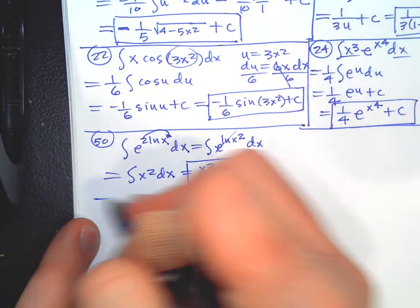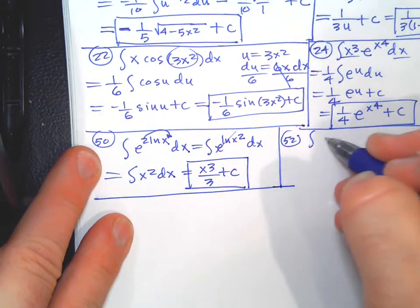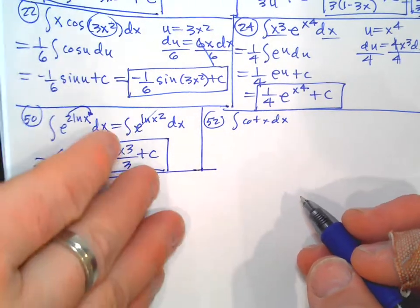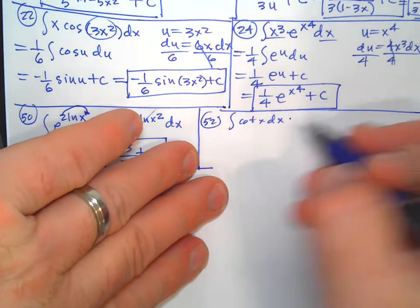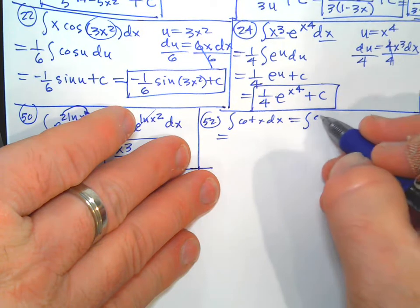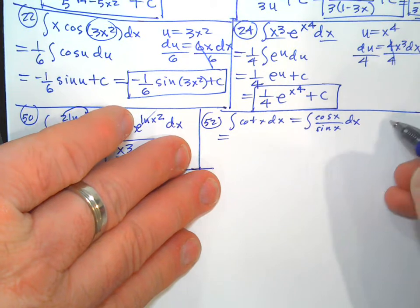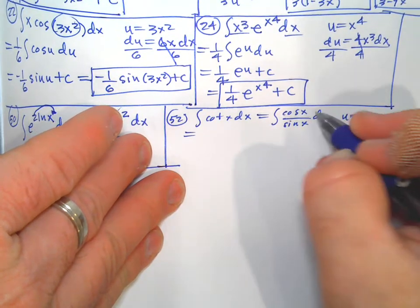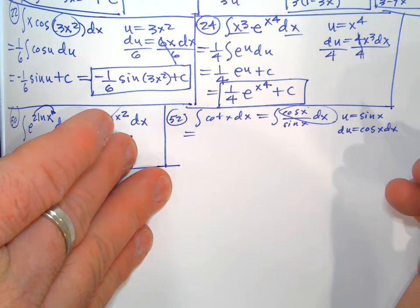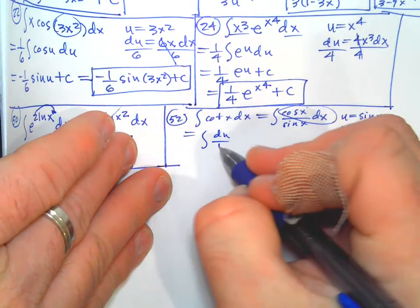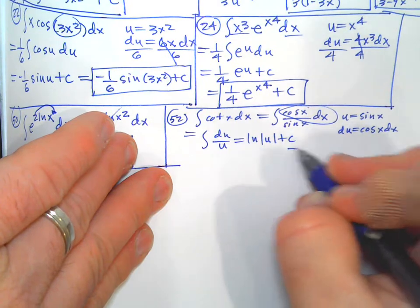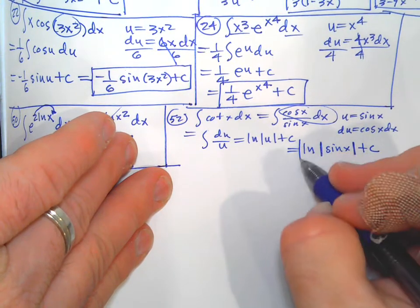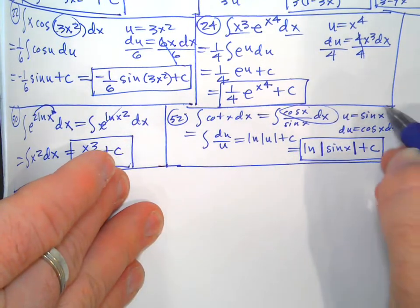Problem 52 is the integral of cotangent(x) dx — we don't have an anti-derivative for that directly. You might think it's cosecant squared, but that's the derivative. Instead, rewrite cotangent as cosine/sine. Let u equal sin(x), du equals cos(x) dx — that's perfect. So this becomes du over u, which is the natural log of |u| plus C, giving natural log of |sin(x)| plus C. We do need absolute values because sine is sometimes positive and sometimes negative.